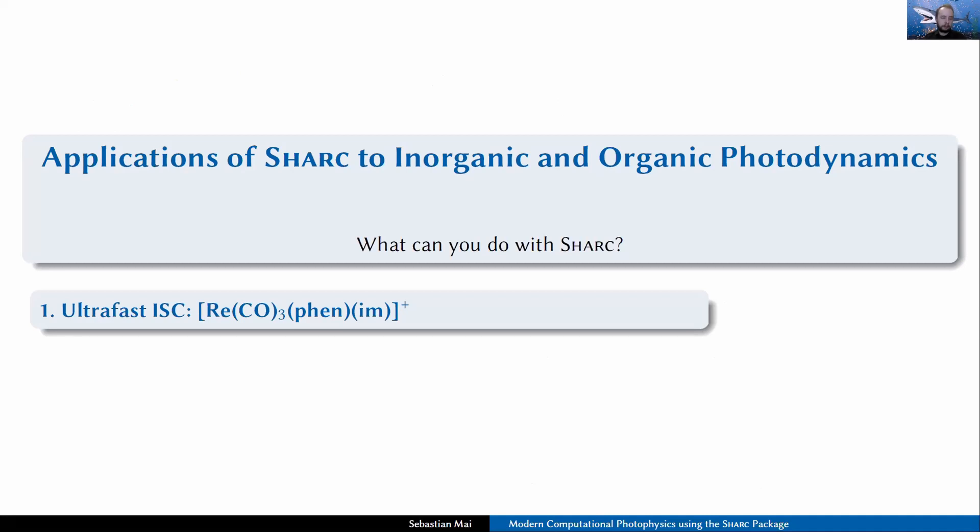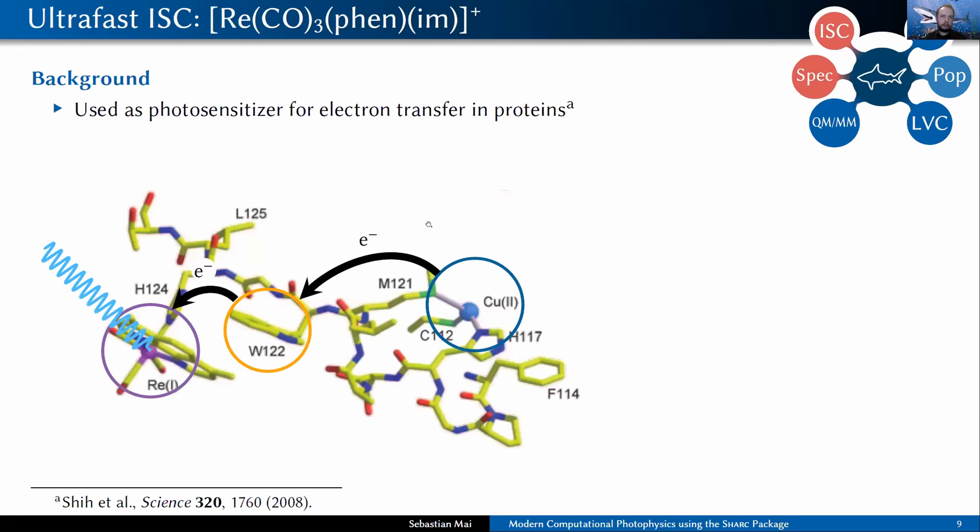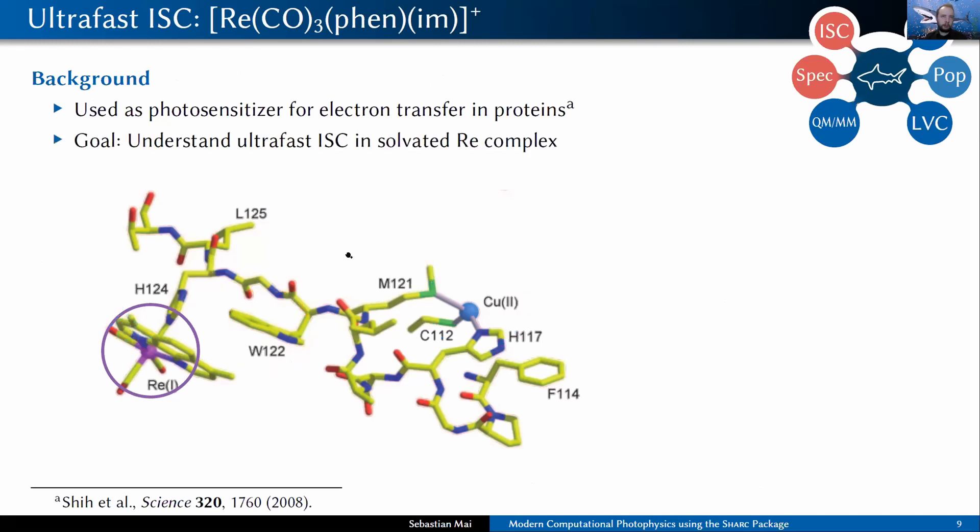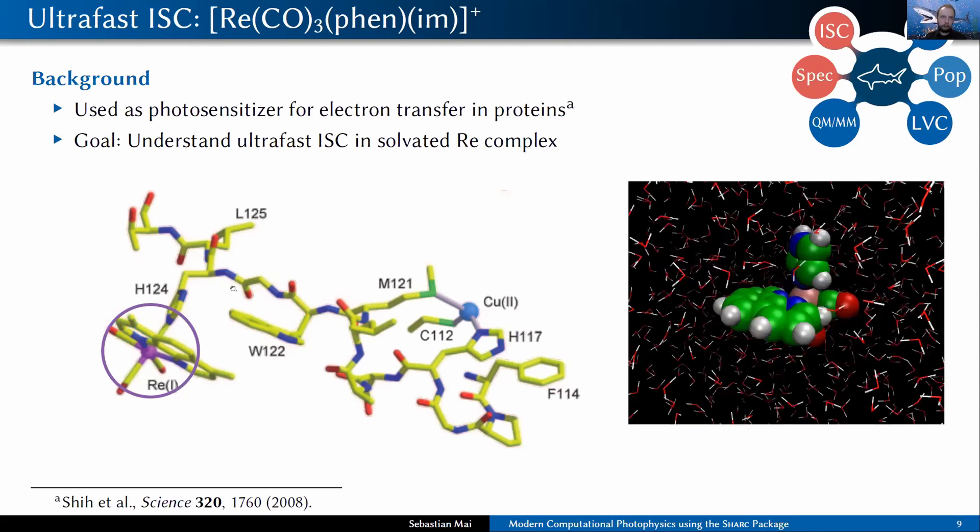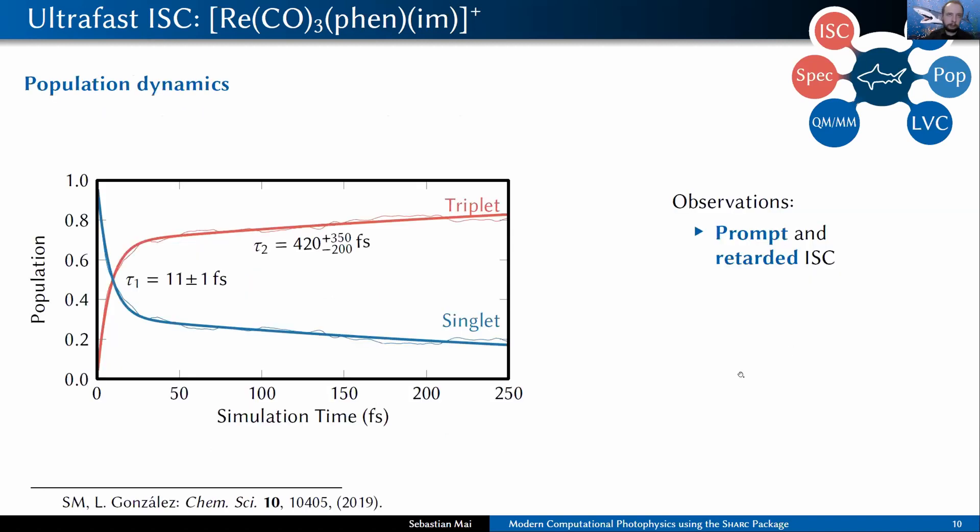The first of these examples is ultrafast intersystem crossing in the rhenium tricarbonyl complex. The background of this is just that this rhenium complex here has been used in the past as a photosensitizer to study electron transfer in proteins. Here the first step is the excitation of this metal complex through light, and then it undergoes quick, very fast intersystem crossing. This was the goal of our study. We put the complex into a solvation environment and started the simulations with a focus on the intersystem crossing.